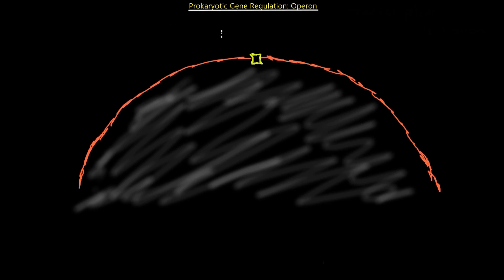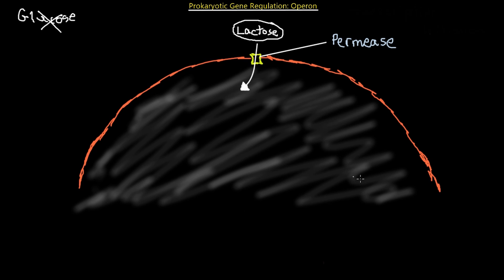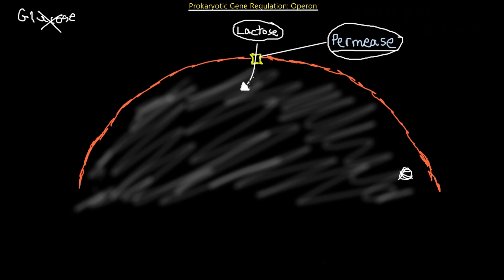Now, what if we look at an environment where glucose is not available but lactose is available? The lactose molecule will have to get through the cell membrane in order to get inside the prokaryotic cell. The only way for lactose to get through the prokaryotic cell membrane is through a protein channel called permease — it needs permease in order to transport lactose into the cell, because glucose is not available and we need something else to supply energy.